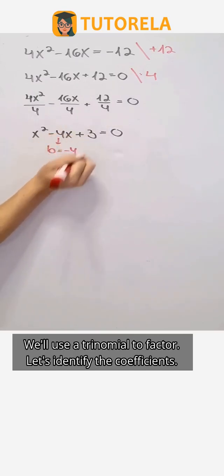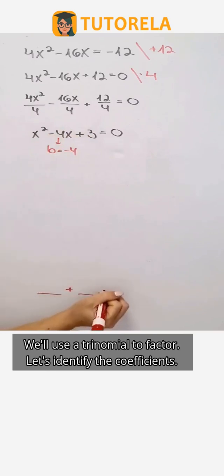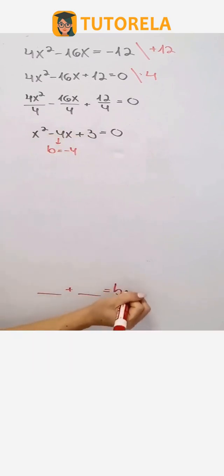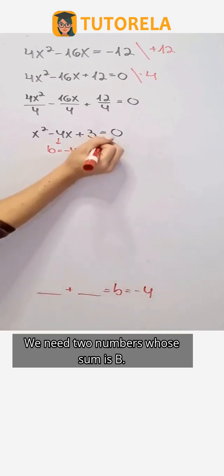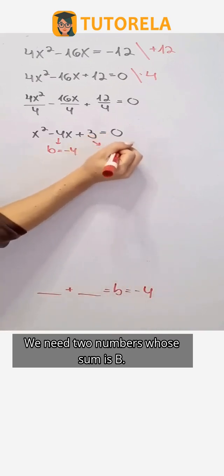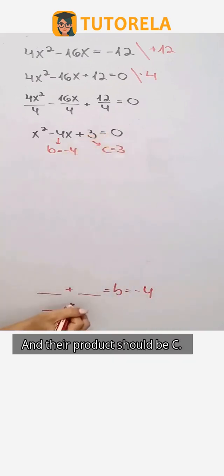We'll use a trinomial to factor. Let's identify the coefficients. We need two numbers whose sum is b, and their product should be c.